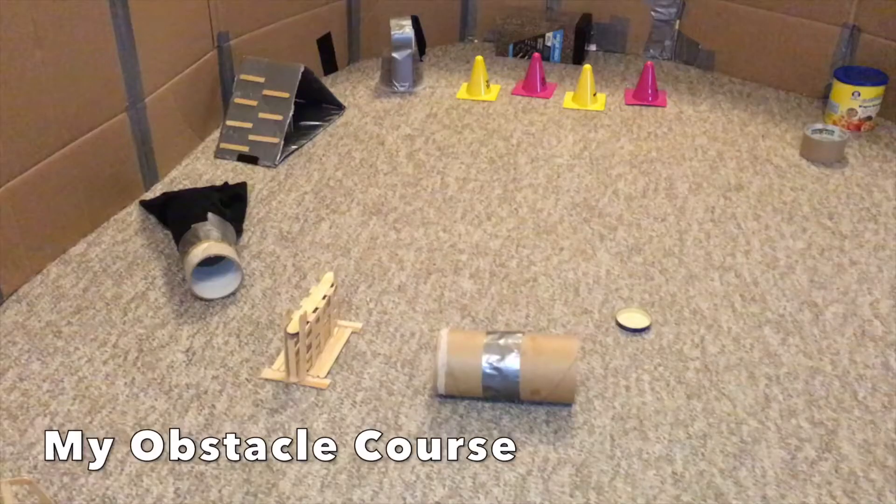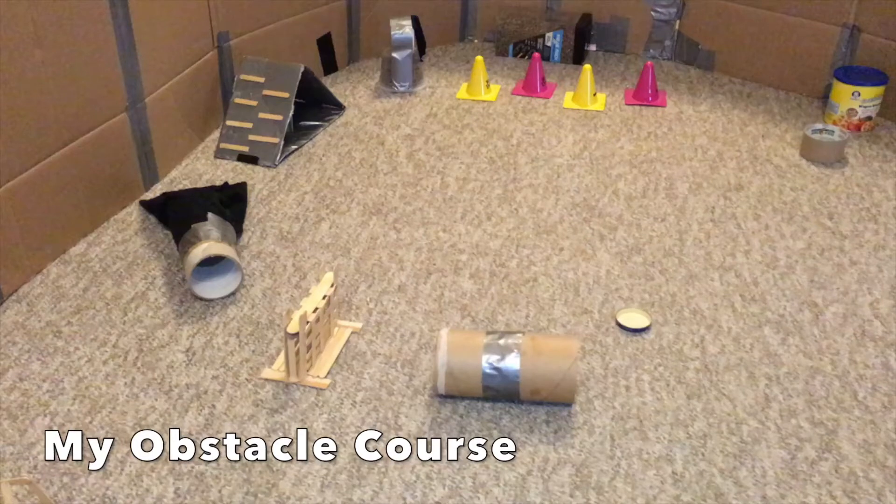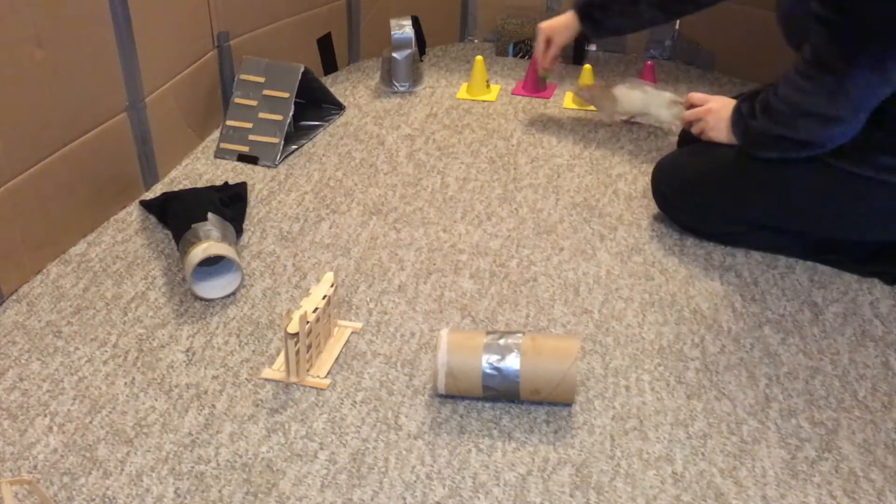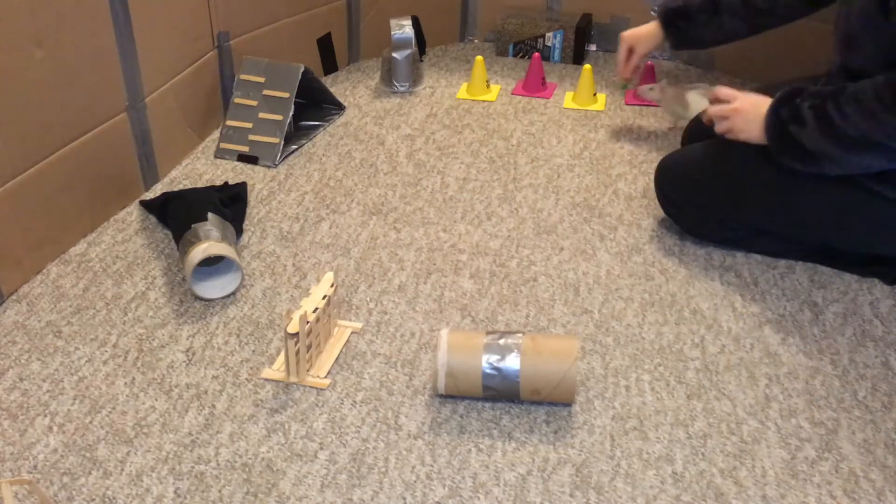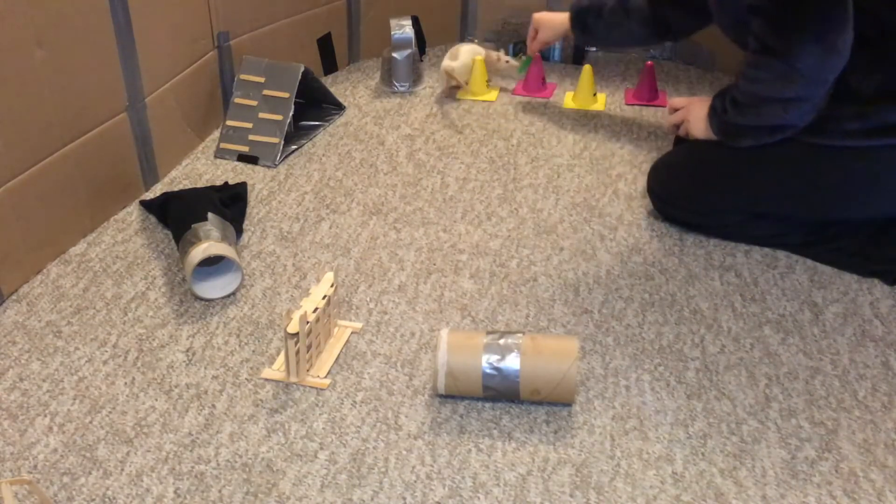Okay, now that our rat knows how to navigate each obstacle on its own, it's time to start chaining them together. Set up your obstacle course in the way that you want your rat to run it. Now lure your rat around to the last obstacle and lead them through it. In this case, my last obstacle is the weaves, and I'm going to lead Latte through it and then reward her.